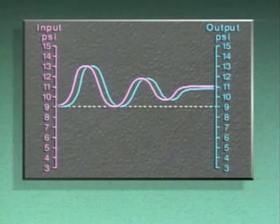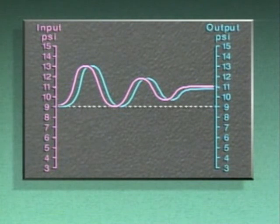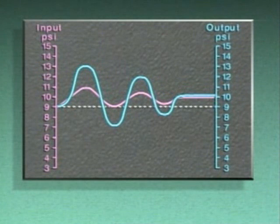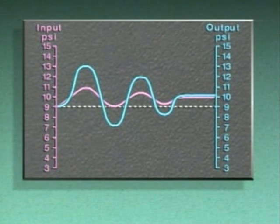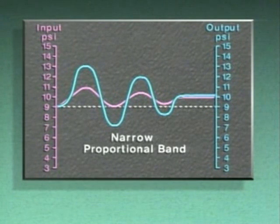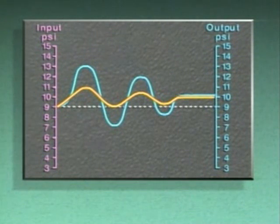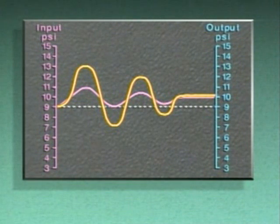The input and output signals on this graph show a 100% proportional band. Now, the signals on this graph show a proportional band that's less than 100%, otherwise known as a narrow proportional band. With a narrow proportional band, a small change in input to the controller produces a larger change in output.